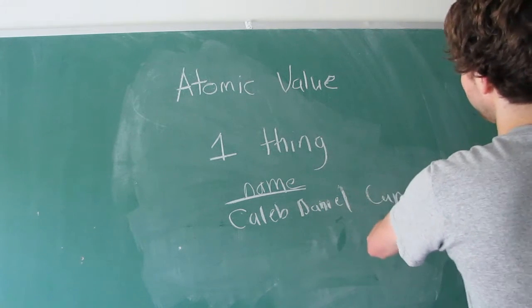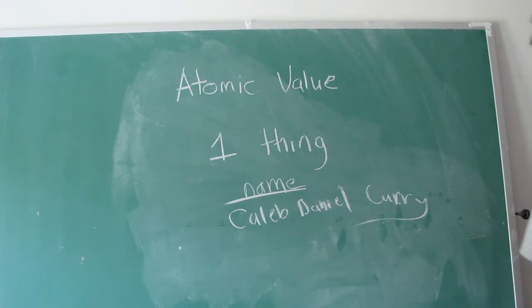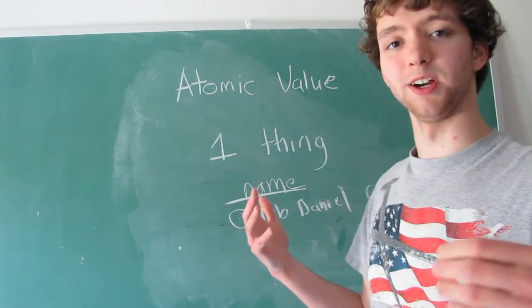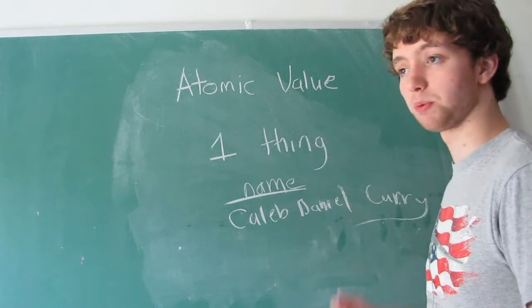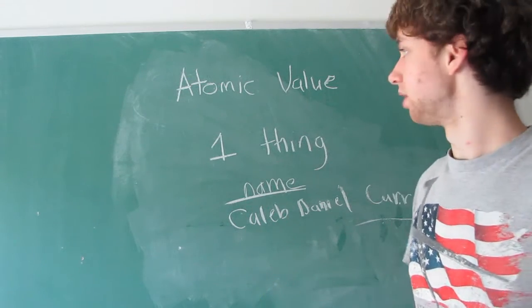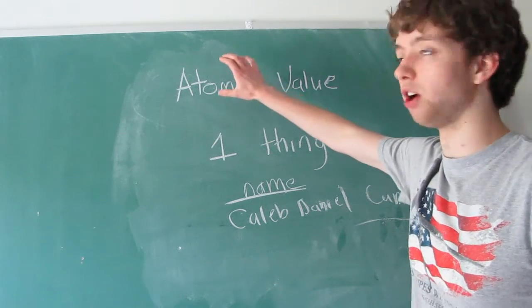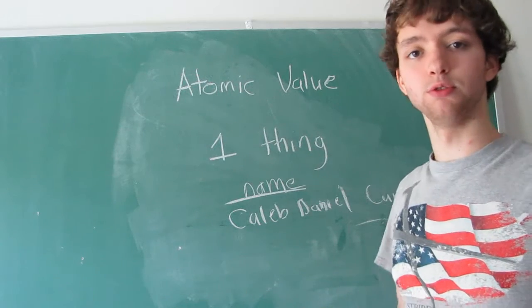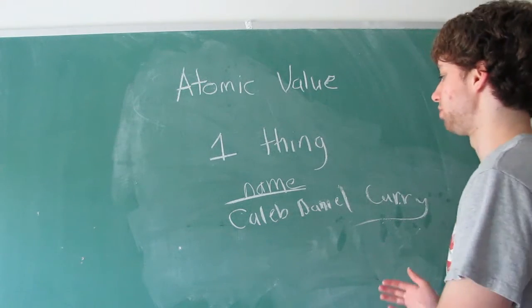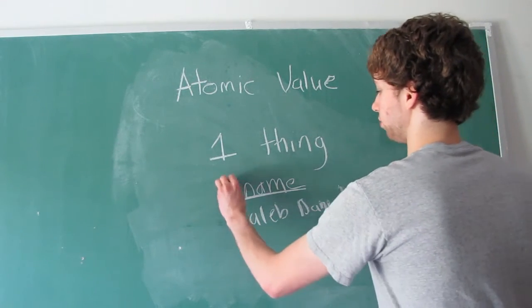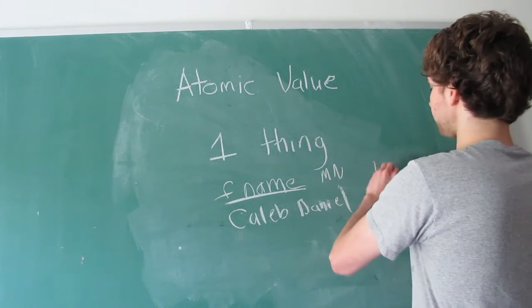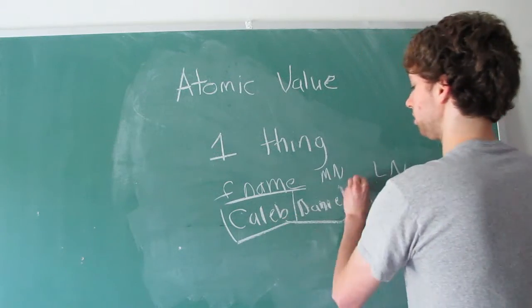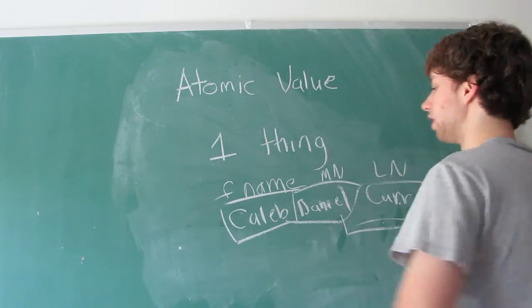Well, although we're talking about one thing, a name, it's not really necessarily atomic because we're storing three names within one name. So if we wanted to make this atomic, the best thing to do for database design would be to break this up into first name, middle name, and last name. So now I have Caleb Daniel, three separate names.